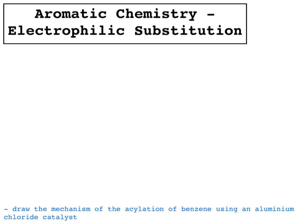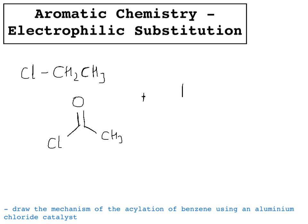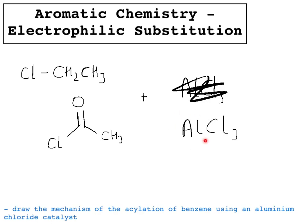The other reaction involving benzene, which is also an electrophilic substitution, is the Friedel-Crafts substitution, or Friedel-Crafts acylation, which involves the aluminium chloride catalyst. You either have an alkyl group — say CH2CH3 attached to chlorine — or you might have an acyl group attached to chlorine. If you react that with aluminium chloride, the aluminium rips this chloride ion off the molecule.